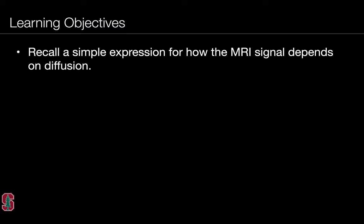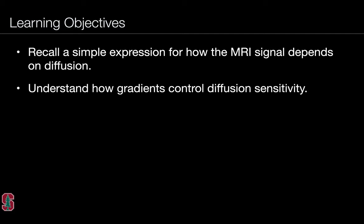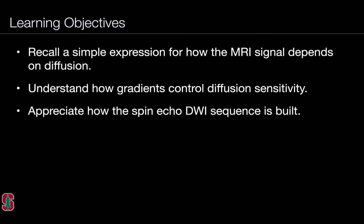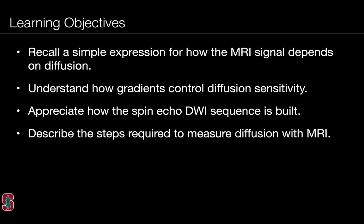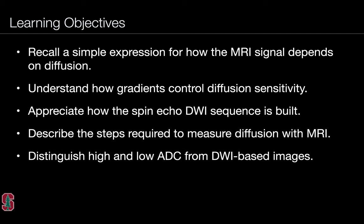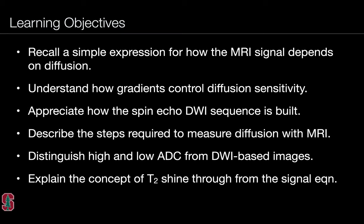The learning objectives for this lecture include being able to recall a simple expression for how the MRI signal depends on diffusion, understand how gradients control diffusion sensitivity, appreciate how the spin-echo diffusion-weighted imaging sequence is built, describe the steps required to measure diffusion with MRI, distinguish high and low apparent diffusion coefficients from DWI-based images, and explain the concept of T2 shine-through from the signal equation.